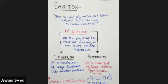Metabolism refers to all the reactions occurring in your body and cells. Any reaction in your body will either connect things or break things. Whenever a larger compound is broken down into smaller substances, that is known as catabolism. And whenever larger compounds are made from smaller substances, that is known as anabolism.